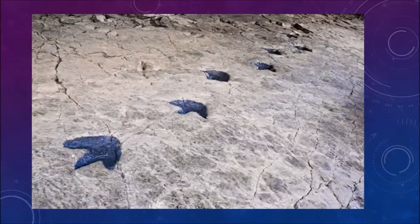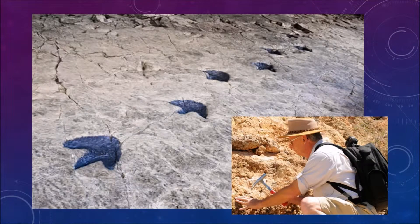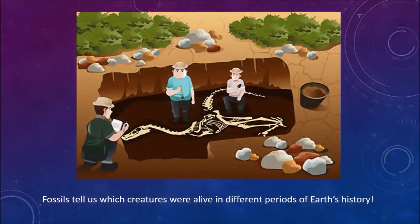But how did people decide how much time falls into each period? They did it with fossils. Fossils are awesome — they're the remains of prehistoric animals and plants: ancient bones, teeth, shells, and footprints that have been turned to stone. Today you can find them all over the place. In Australia, the rocks hold fossils of everything from giant kangaroos to dinosaurs.